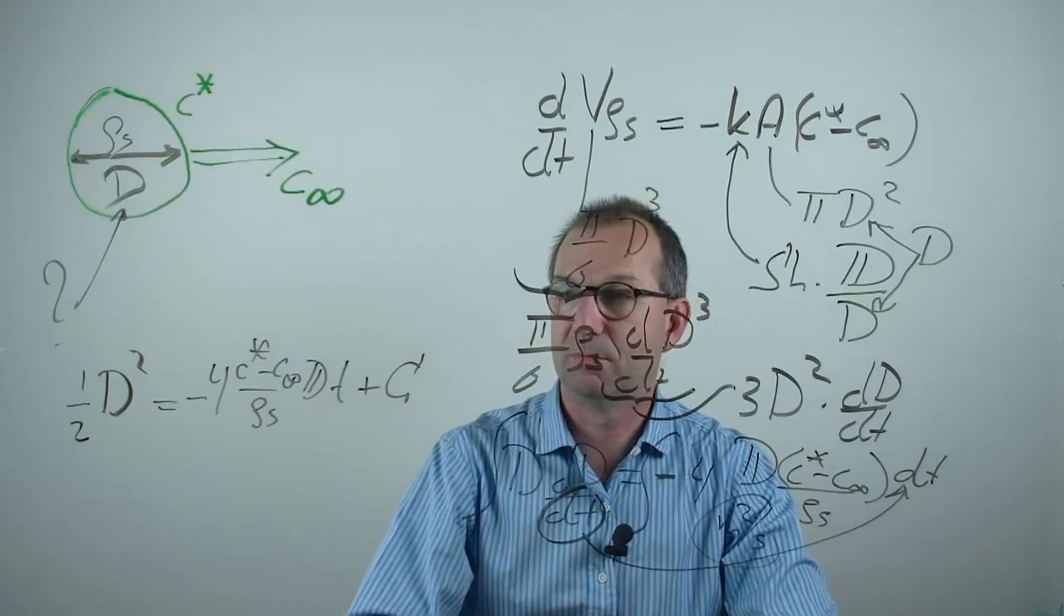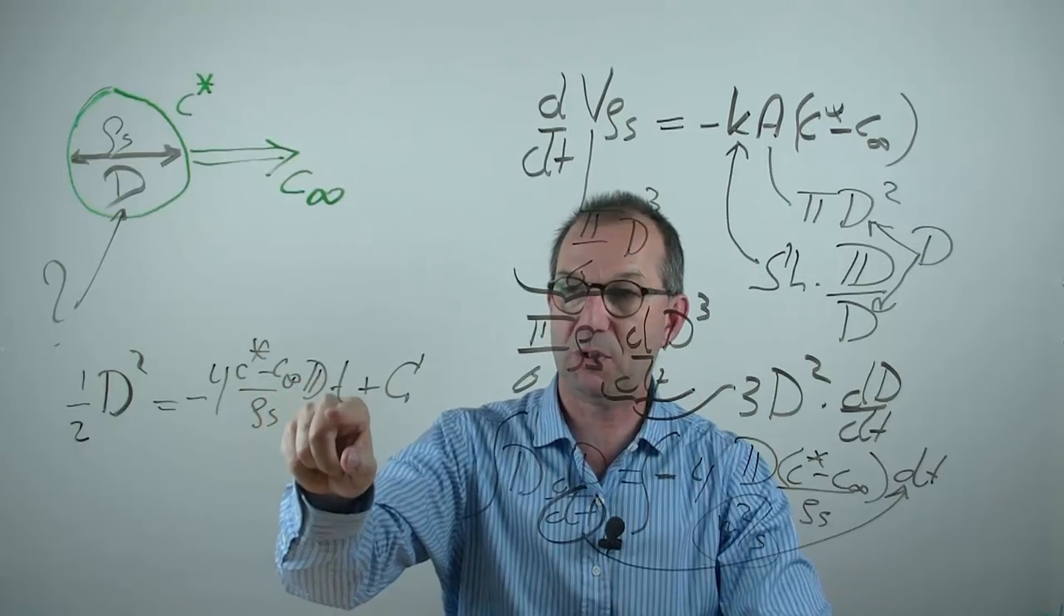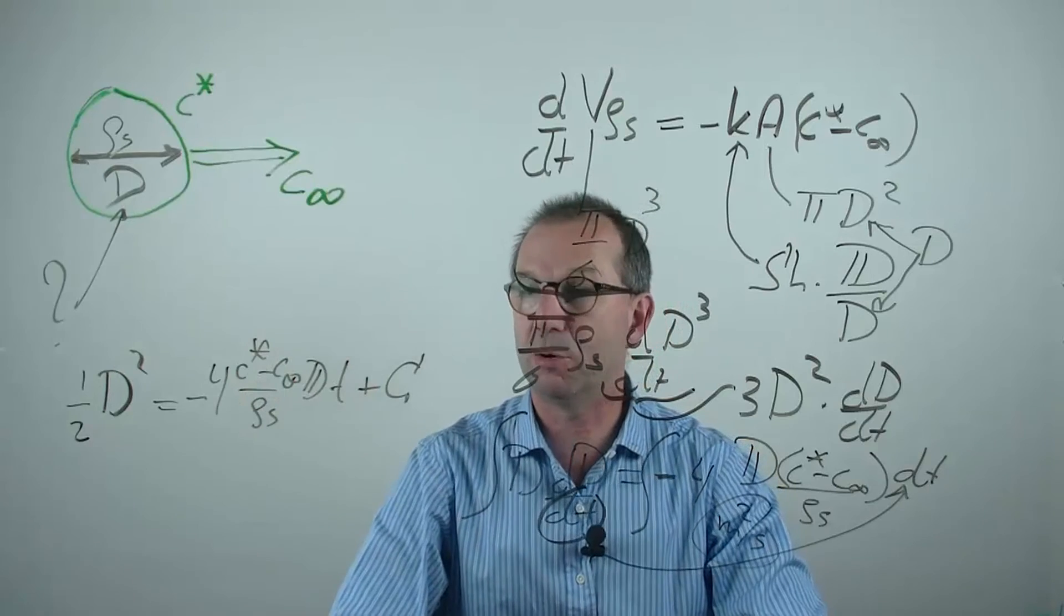Check my dimensions. Meter squared. This part. Dimensionless. Meter squared per second times second. Dimensionally correct.